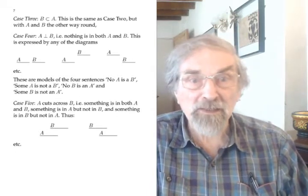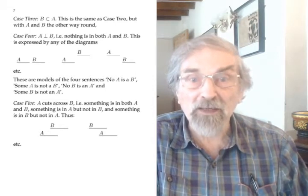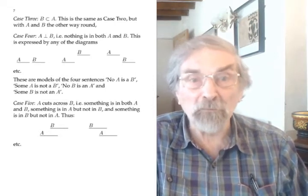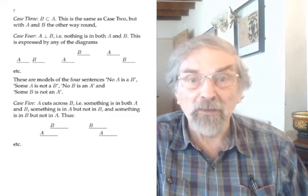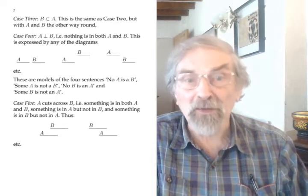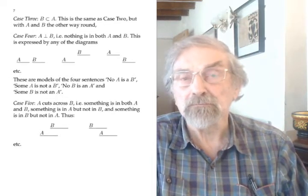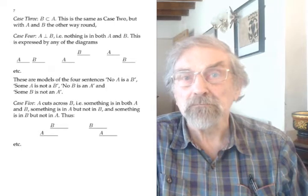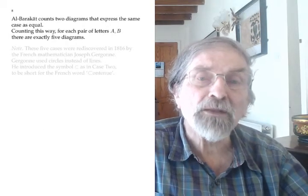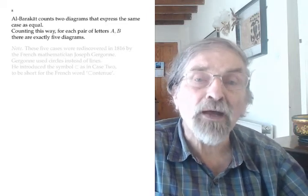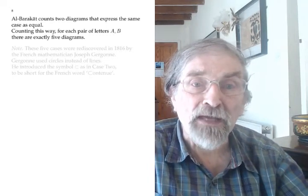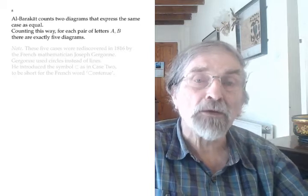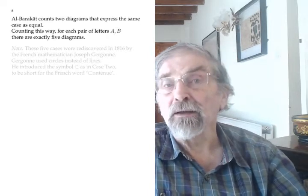The fifth case is that A and B do have an overlap but there is some of A that is not in B and some of B that is not in A. There are several diagrams in this case; you can work out what sentences these diagrams are models of from the definition of the case. As far as al-Barakat is concerned, two diagrams of the same case count as the same diagram, so in his way of counting there are exactly five diagrams.